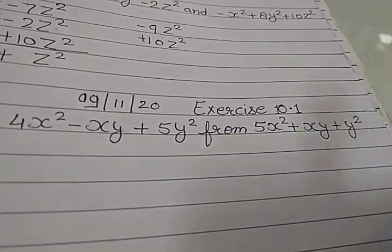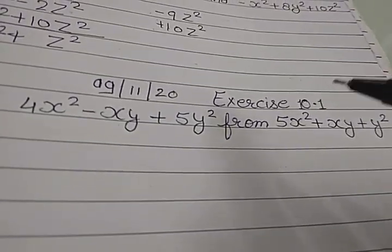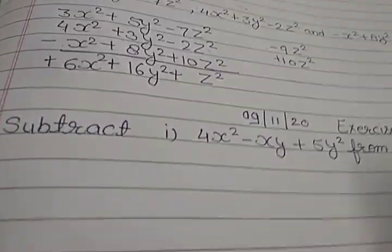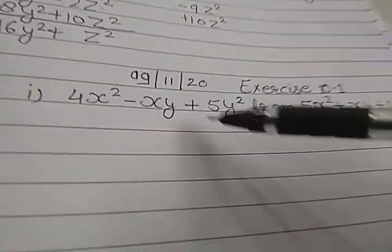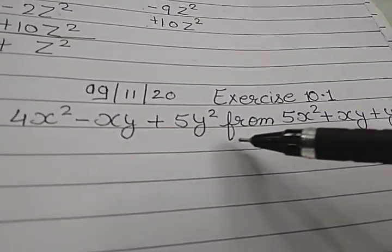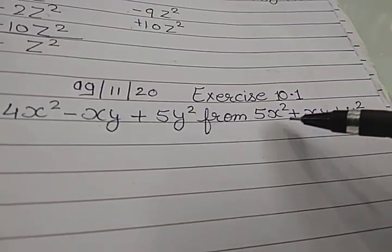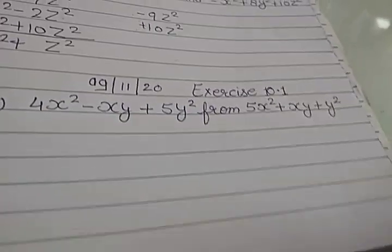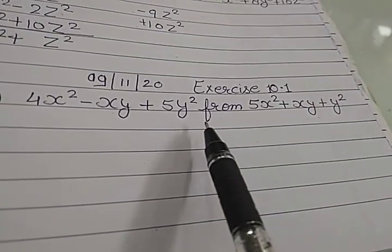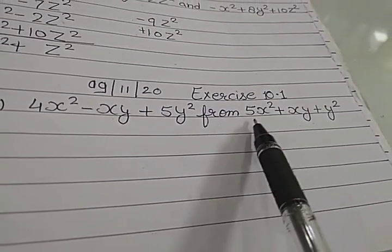Children, today we will continue Exercise Number 10.1, Question Number 7. Subtract: 4x² - xy + 5y² from 5x² + xy + y². Now, wherever this 'from' is written, we always write this number first.